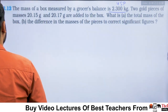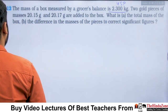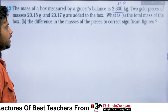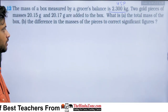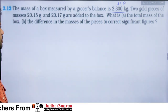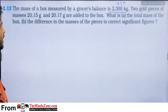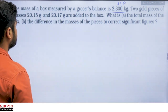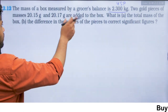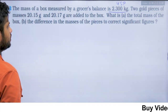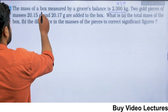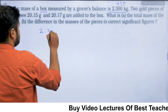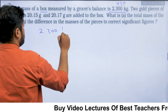Two gold pieces of masses 20.15 g and 20.17 g are added to a box. The question asks: what is the total mass of the box? The balance reads 2.300 kg.